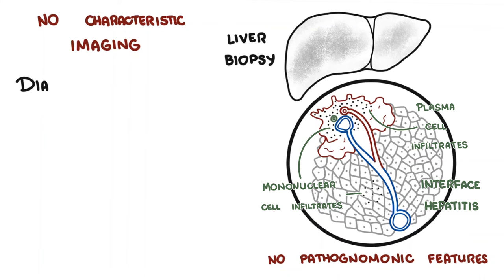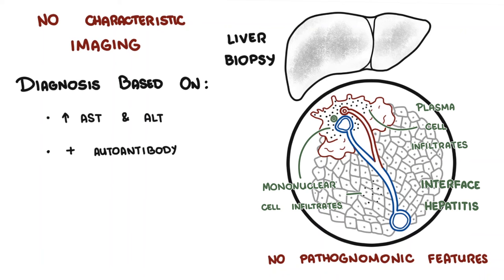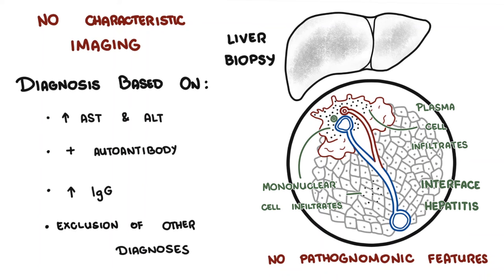The diagnosis of autoimmune hepatitis is based on a set of criteria that includes several things: elevation of liver function tests, specifically AST and/or ALT; positive autoantibodies; elevated IgG; and exclusion of other diagnoses such as Wilson's disease, viral hepatitis, or drug-induced liver disease. A liver biopsy can also help by showing inflammation and the characteristic histological features discussed earlier.